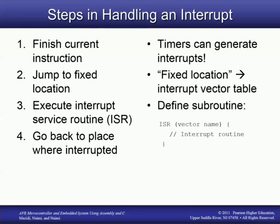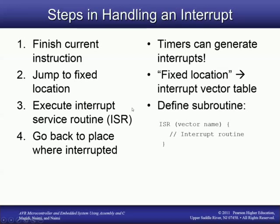Whenever an interrupt takes place, the microcontroller finishes its current instruction inside the main body of code. It would finish its current step, save that step, and jump to a fixed location in memory. Whenever a certain interrupt occurs, execution moves to a specific place in memory dictated by which interrupt occurred. The microcontroller then executes the interrupt service routine — a specific body of code that handles that event. Once the ISR is done, we go back to the next instruction where we were when the interrupt happened.